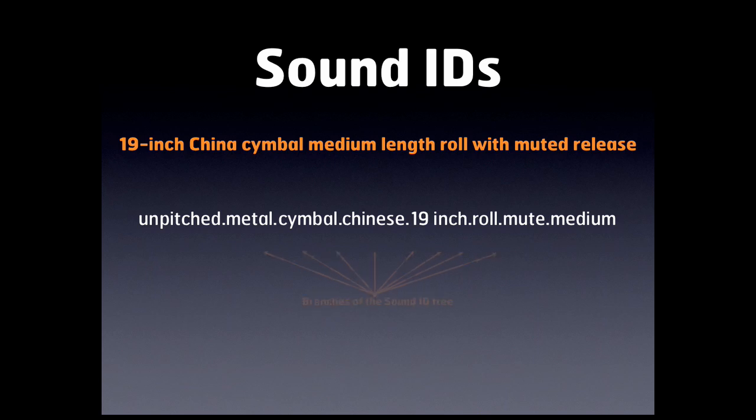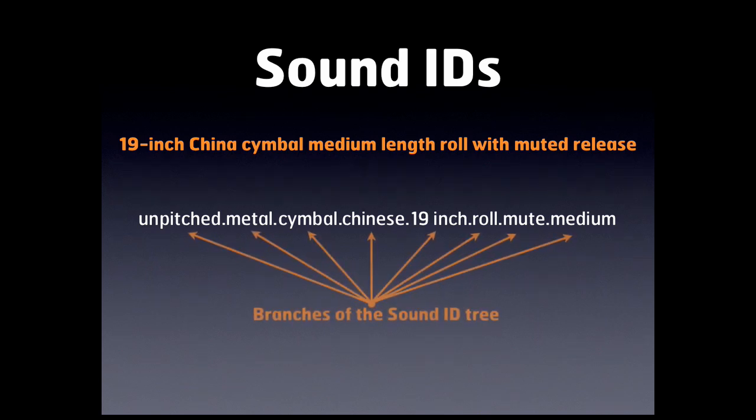This is called a tree format, and each one of these descriptors is called a branch. There are thousands of these specific Sound IDs for the VDL library alone, which is why the template and sound set development can be rather involved.